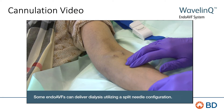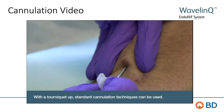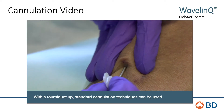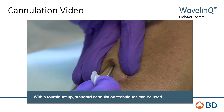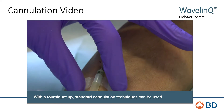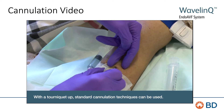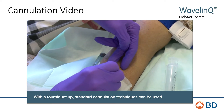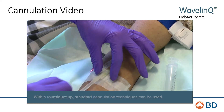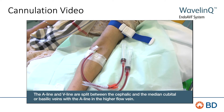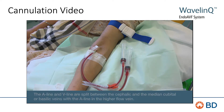Some endovascular fistulas have a split flow and may have needles placed in different vessels. That is demonstrated here. Again, with the tourniquet up, standard cannulation techniques can be used. Here you see the arterial and venous lines are split between the cephalic and median cubital vessels. The arterial line is placed in the vein with the higher blood flow.